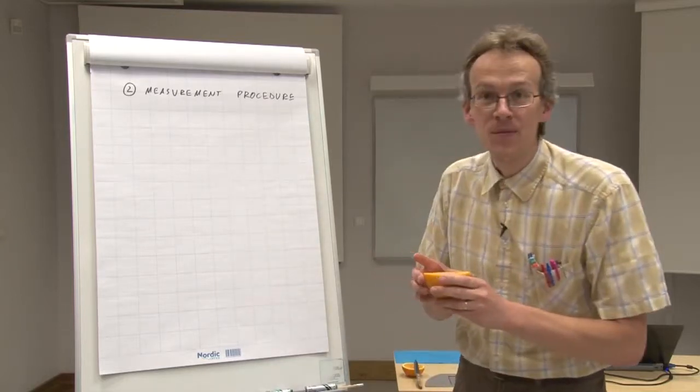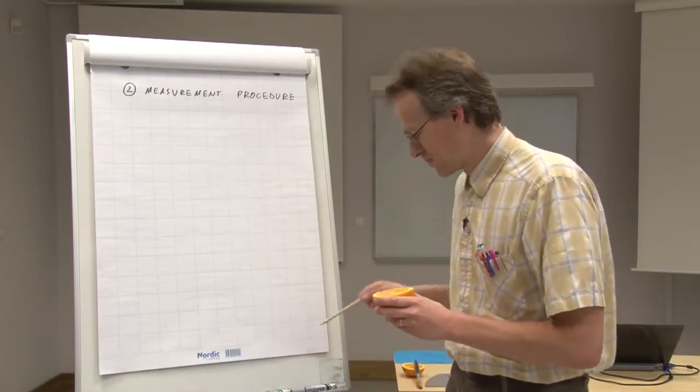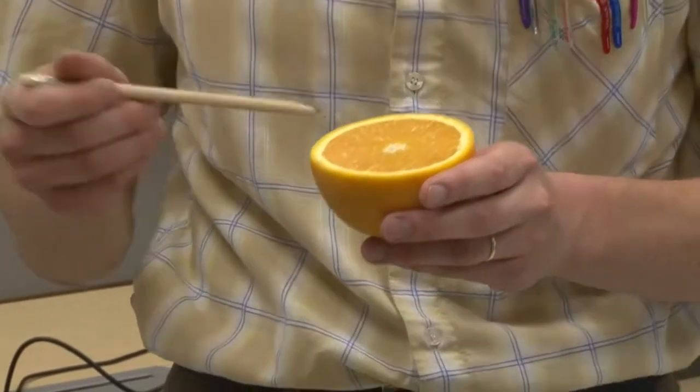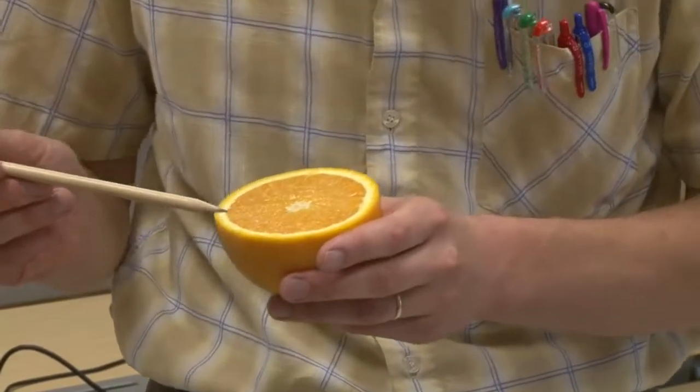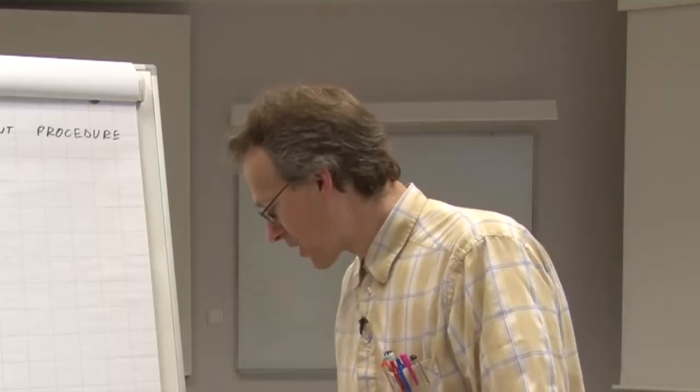So if we determine the pesticide content only in the peel, then obviously we have to separate this peel from the rest of the orange. If on the other hand we want to determine the pesticide content in the overall orange, we must analyze the overall orange. And since most probably pesticide content is different in different parts of the orange, we must homogenize it carefully.